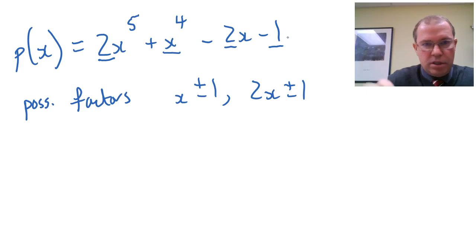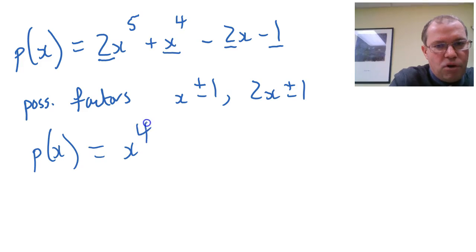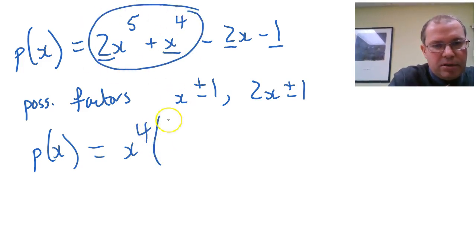So what I'm actually going to do is take our polynomial and I'm going to take x to the 4 out of the first two terms. If I take x to the 4 out of the first two terms, I get 2x plus 1.